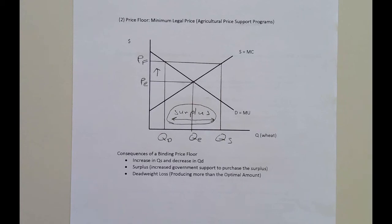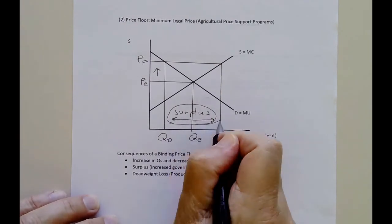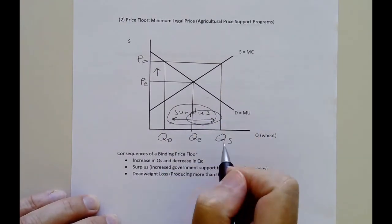And therefore, we tend to have a lot of overproduction right here. And so we're producing a lot more than the optimal.